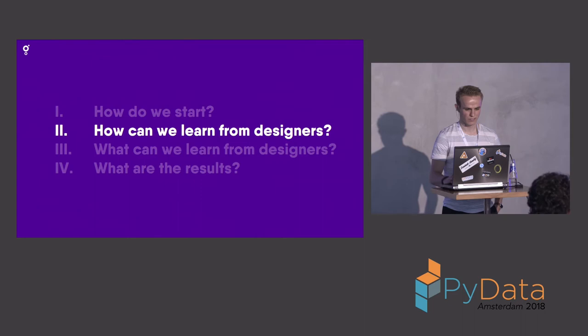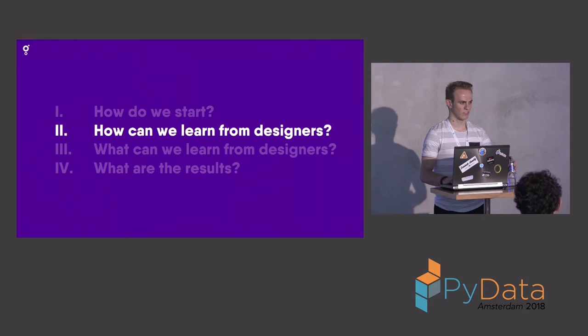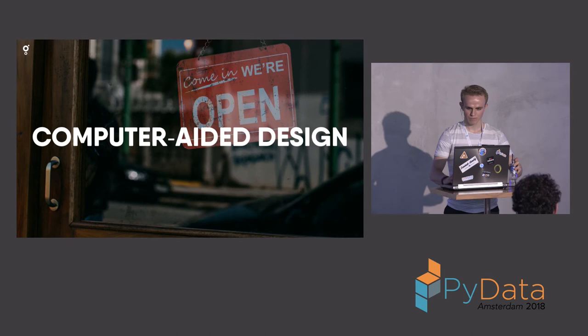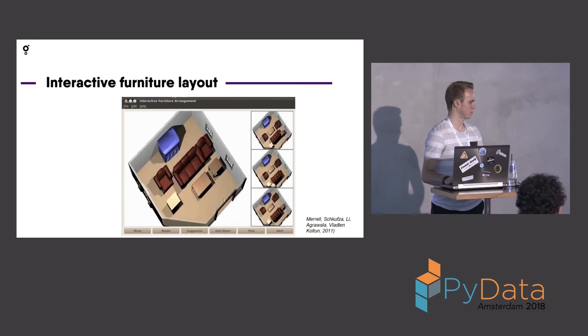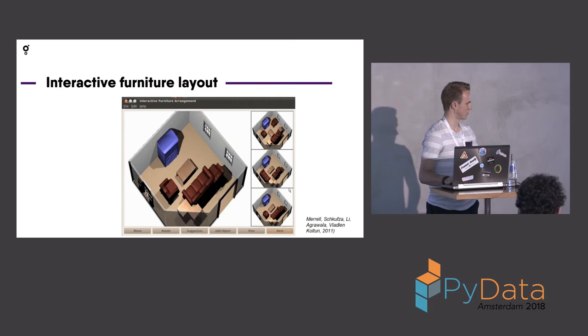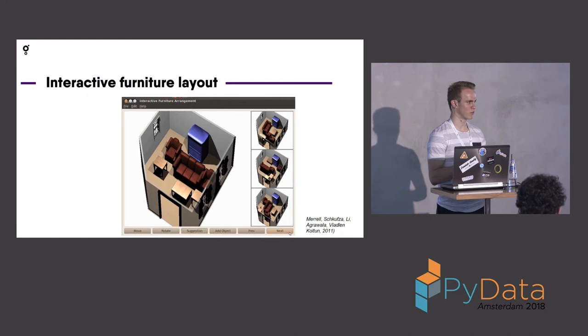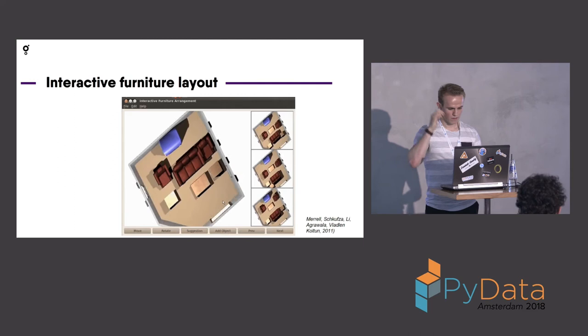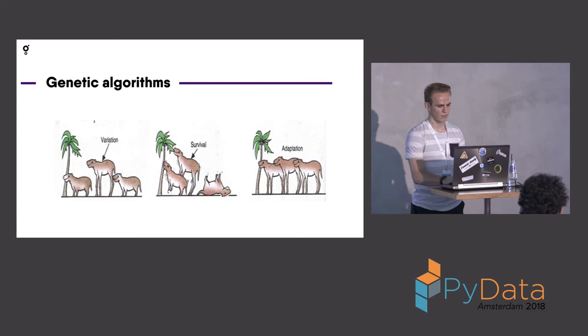Apparently, we should not start with data — we need to find some other solution. We can try to incorporate designers in the process. There's a research field called computer-aided design. It's not really explored much, but I stumbled upon this research in which you can make a furniture layout using computer-aided design. You can select a couch and two chairs, for example, and then it can create lots of variations for you, so you can see what you like and eventually select.